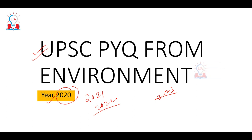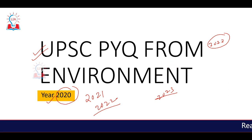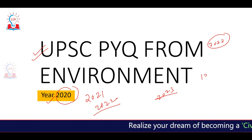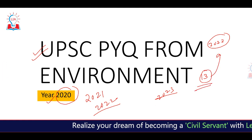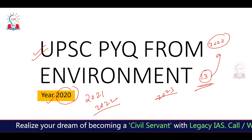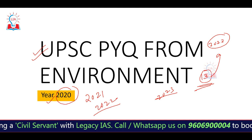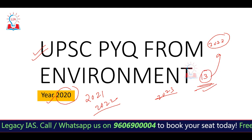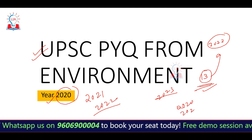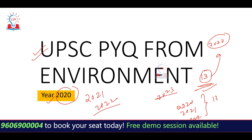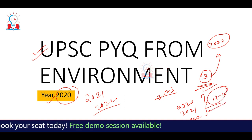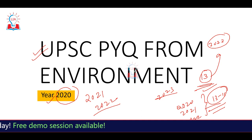Even though UPSC tried to eliminate these methods — and in the 2022 prelims exam they asked a few questions like 'only one pair,' 'only two pairs,' 'only three pairs' — there were still more than 13 questions in the 2022 prelims exam where you could easily apply the elimination method. On average, 13 to 15 questions in 2020, 2021, and 2022 were solvable with the elimination method.